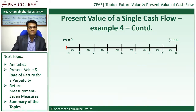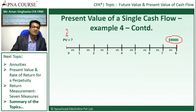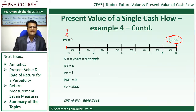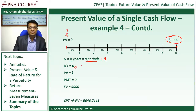I draw my timeline from 0 to 8 — 8 periods of 6 months each. I'm expecting to receive $9,000 at the end of the 8th period. What is the present value of this $9,000 today? N in this case, which is 4 years, is 8 periods, so N becomes 8. The question was 12% per annum, so for each period I am earning 6% per period. I need to calculate the present value.